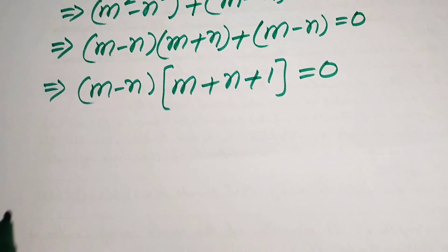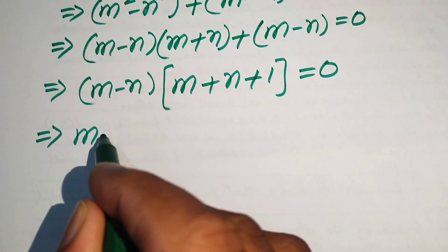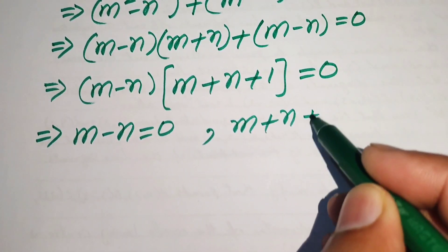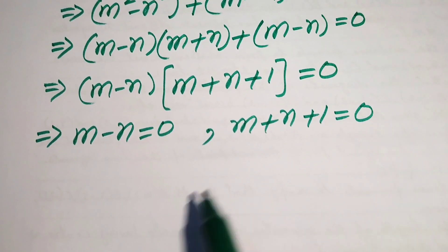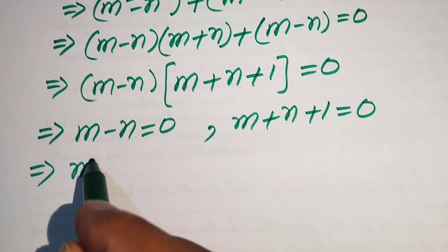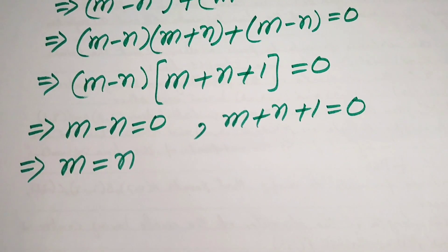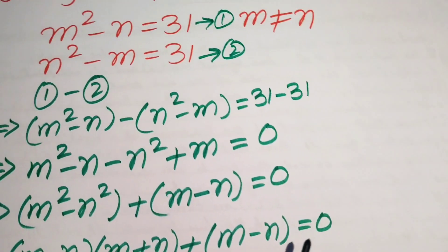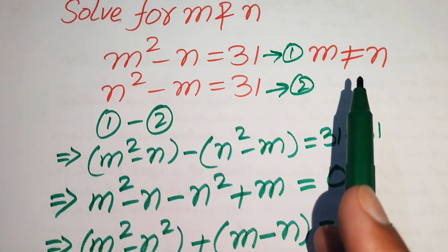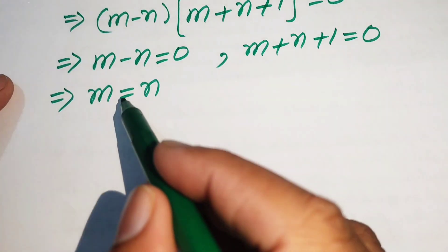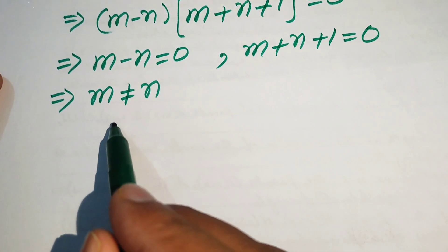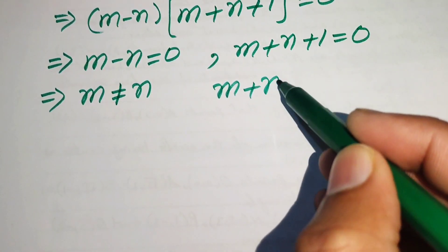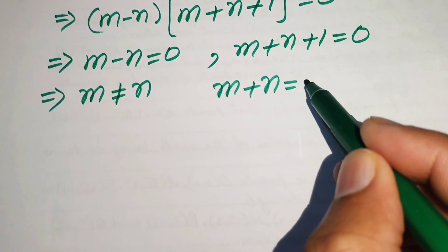We take m minus n as the common factor, giving m minus n times m plus n plus 1 equals zero. This splits into two cases: Case 1 is m minus n equals zero, and Case 2 is m plus n plus 1 equals zero. In Case 1, we get m equals n, but since m and n must be distinct, we reject this case. From Case 2, we get m plus n equals minus one.